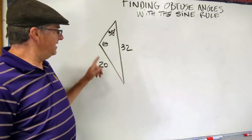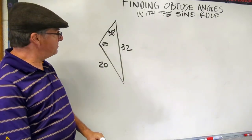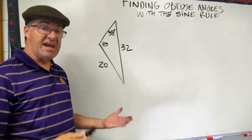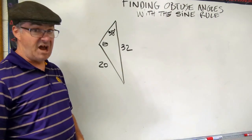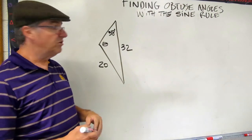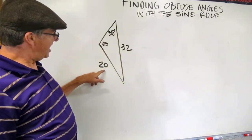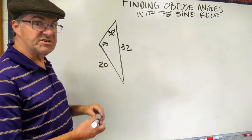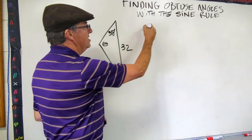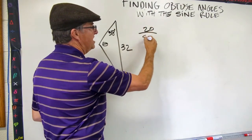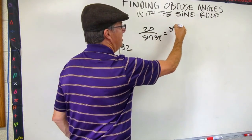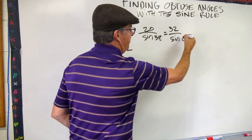Okay, so here we go. Here's our triangle. And yep, we're being asked to find theta and theta is obviously obtuse. Remember, obtuse angles are bigger than 90. So obviously that one is bigger than 90. So we can use our sine rule. We can do this side over the sine of 38. Remember, sine rule is length of side over sine of opposite angle. So that would be 20 over sine 38 and that equals 32 over sine theta.